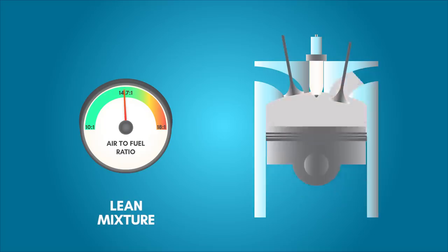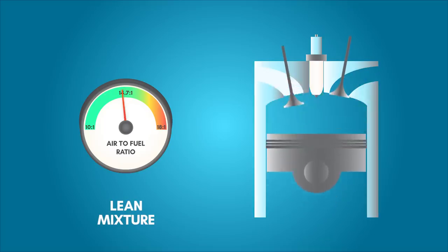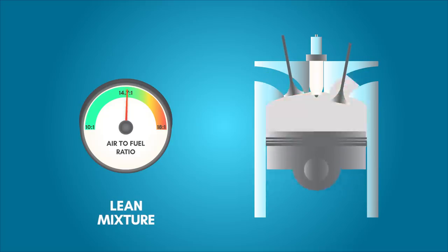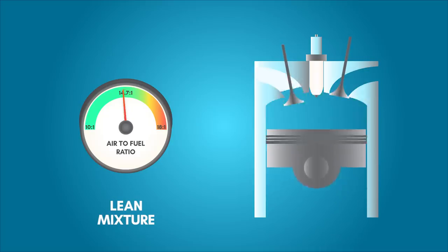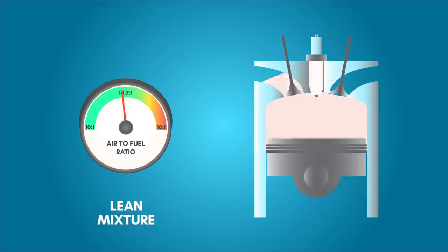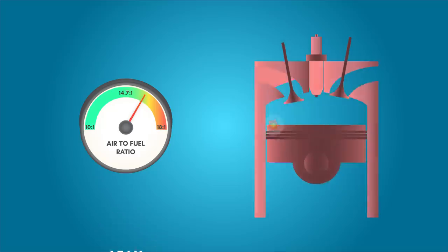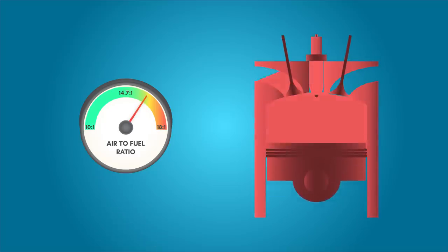Running lean uses less fuel but can be damaging. Gasoline vapors by nature are very volatile. Within a cylinder, compressed with air, it doesn't take much for the mixture to self-ignite. For an engine to function properly, ignition must be triggered by the spark plug at a very specific time in the cycle.